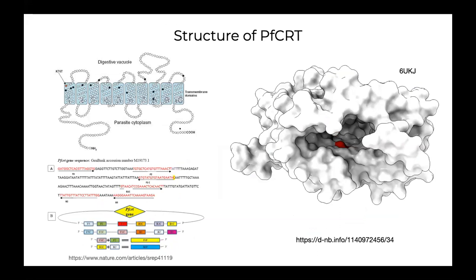Next, to learn about the structure of PFCRT. The main genetic determinant of chloroquine resistance in Plasmodium falciparum encodes a 424 amino acid protein with 10 transmembrane helices. At least six independent origins of these mutations have been already reported. There are various mutations in PFCRT haplotypes, and in today's session our focus is to learn about drug resistance developed through these major characterized mutations.